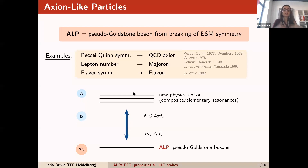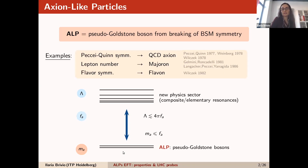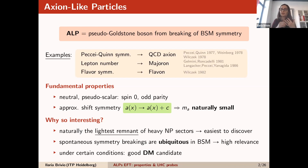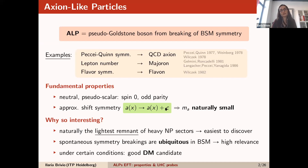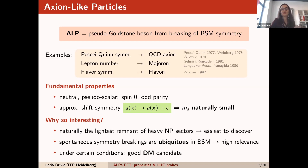In all of these cases, what you have is some new physics sector with a number of new resonances, composite or elementary depending on the model, living at a high scale lambda. This new physics sector has spontaneously broken global symmetries with associated pseudo-Goldstone bosons. These are naturally much lighter than the whole sector — these are the ALPs, essentially. Wherever they come from is not relevant for our discussion. They all have the same properties: they are neutral, have spin zero, odd parity, and their interactions are symmetric under shifts, which comes from the pseudo-Goldstone nature and serves as a protection for the mass. ALPs are naturally the lightest remnant of a new physics sector, making them most likely the best candidate to be discovered first.